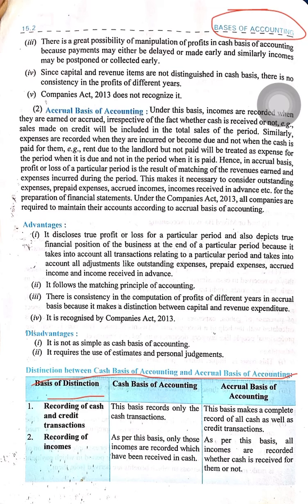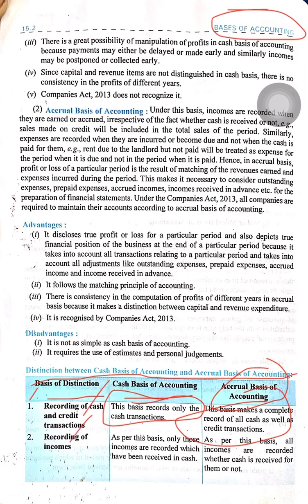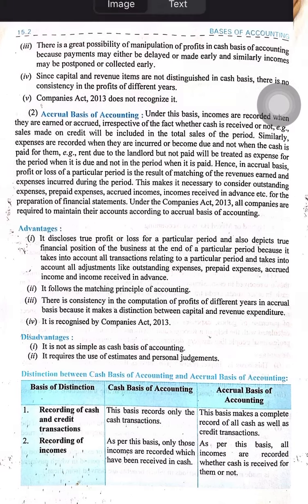The first difference is recording of cash and credit transactions. In cash basis of accounting, we only record cash transactions. But in accrual basis of accounting, we record both cash as well as credit transactions. Similarly, regarding incomes, in cash basis we only record those incomes which are directly received in cash, but in accrual accounting we record cash as well as accrued incomes.